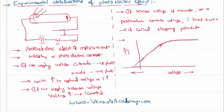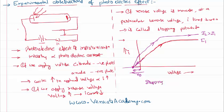If we repeat the experiment with a higher intensity i2, greater than i1, the current increases and reaches a different, higher saturation current. However, when reverse voltage is applied, the stopping potential is the same for both intensities. So the stopping potential is independent of the intensity of the light used; whatever the intensity, the stopping potential for a given metal surface remains the same.